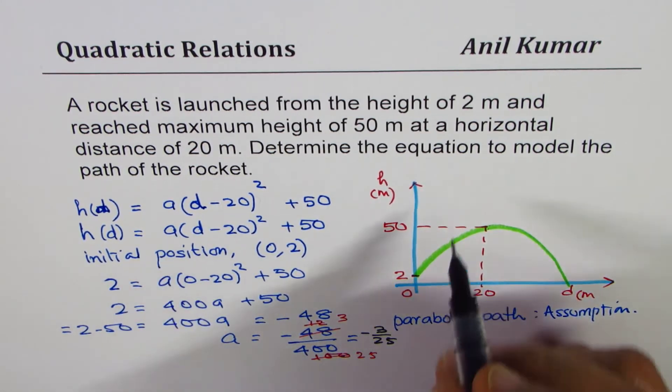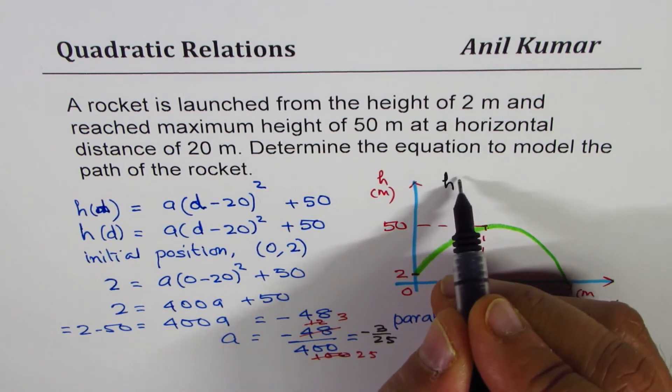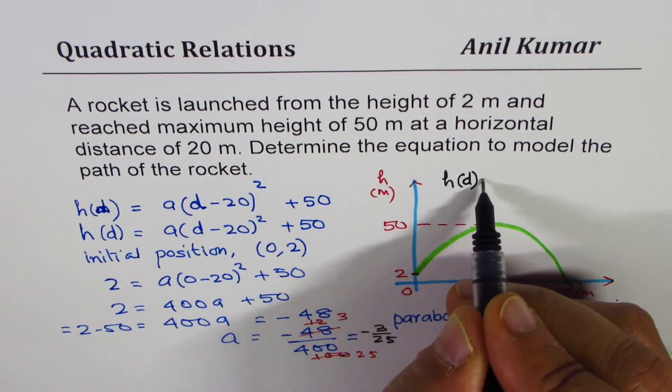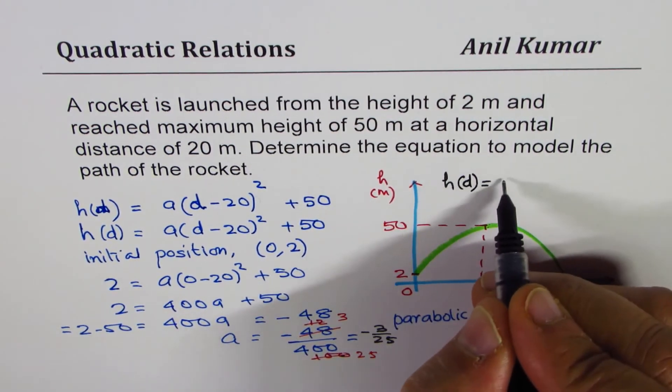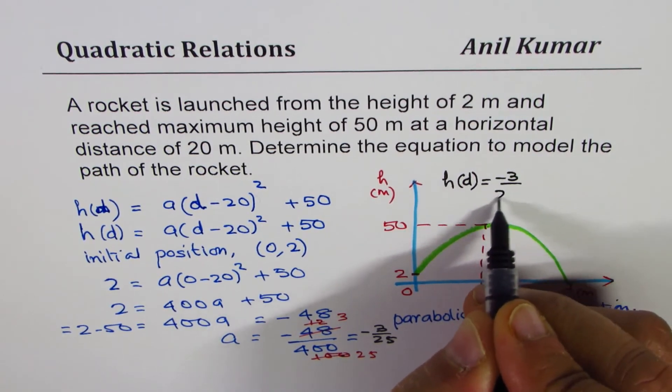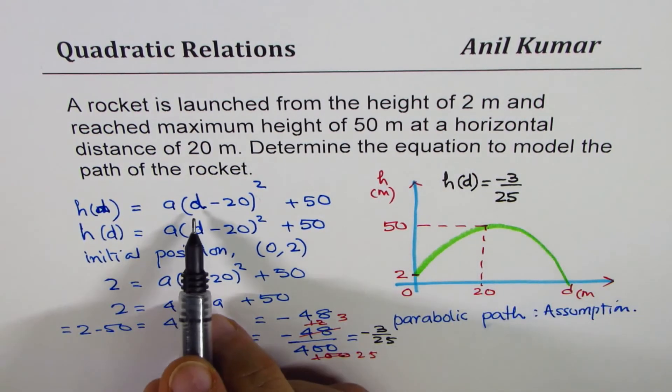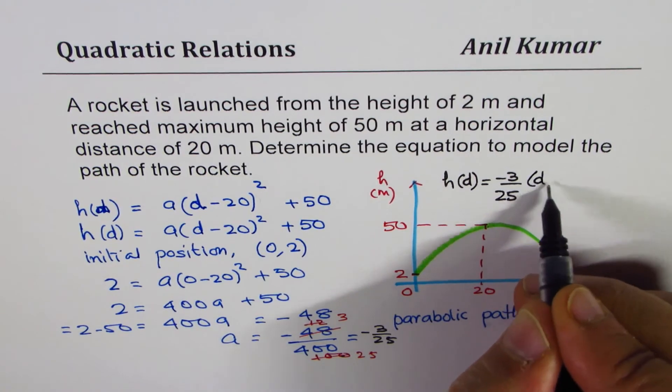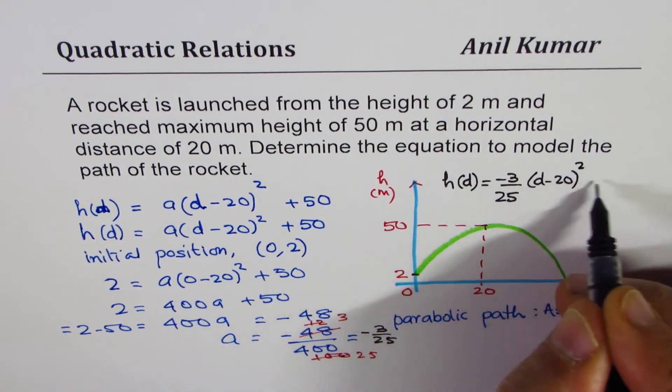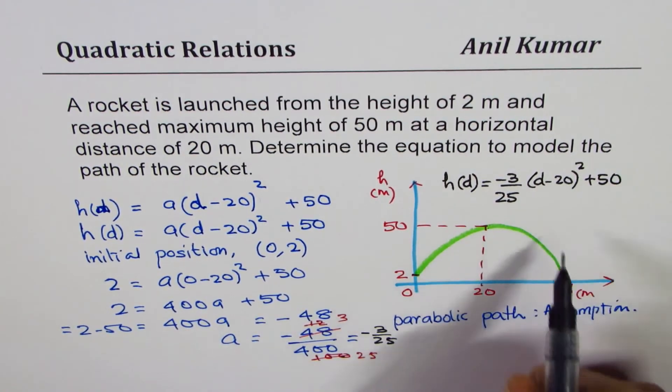Substituting this value of A here, we can write H, the height with respect to distance, as minus 3 over 25, D minus 20 whole square plus 50.